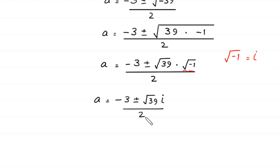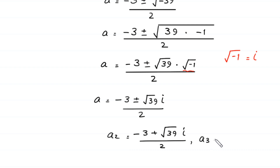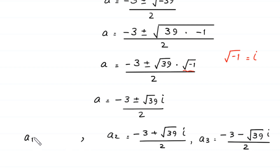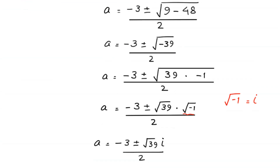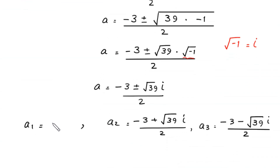From here we get two complex values: a2 equals negative 3 plus the square root of 39 times i, divided by 2, and a3 equals negative 3 minus the square root of 39 times i, divided by 2. The first solution a1 equals 4 is real, while these two solutions are complex.